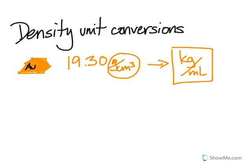Let's go ahead and set up the problem first. We start out with what we're given: 19.30 grams, and I'm going to divide this by 1 cubic centimeter. This is 19.30 grams per cubic centimeter.